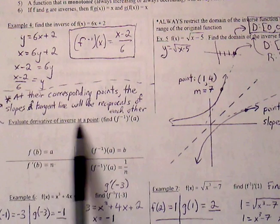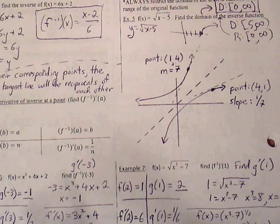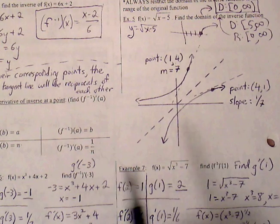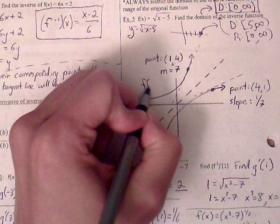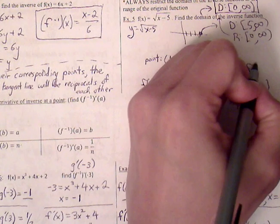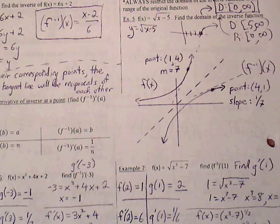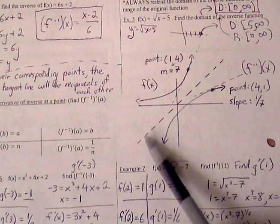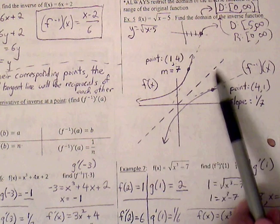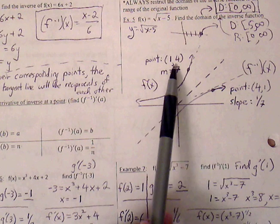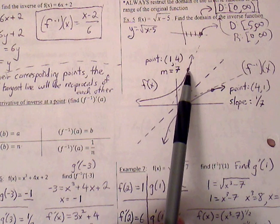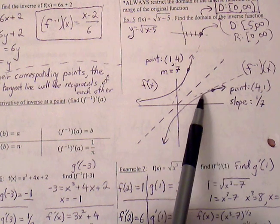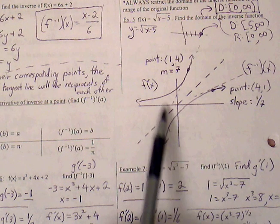Moving on to evaluating the derivative of an inverse at a point. Looking at a graph showing a function f of x and its inverse f inverse of x, we can see they are symmetric about the line y equals x. If a point (1, 4) exists on the original function, then the point (4, 1) must exist on the inverse function — that is a property that holds for every function and its inverse.